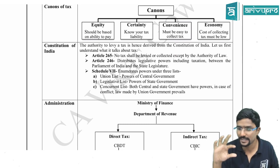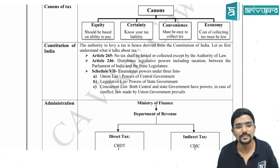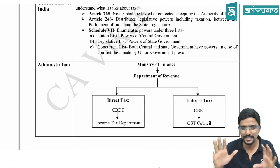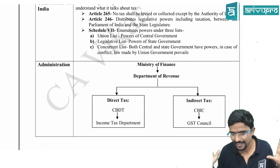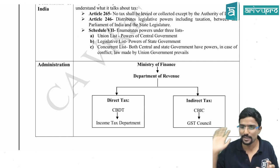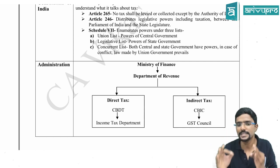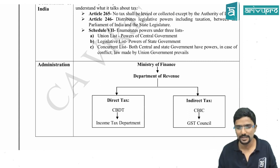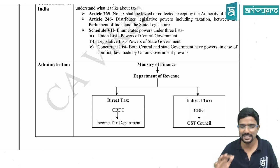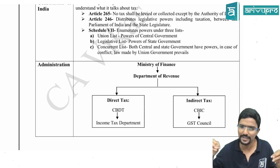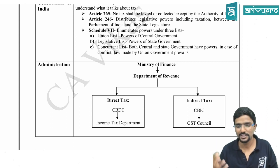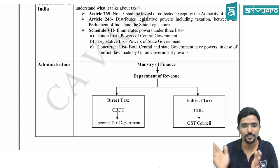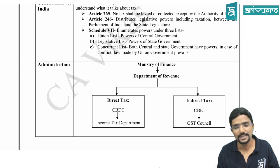CGST and SGST are both levied together, not separately — that is the example for the Concurrent List. Please don't worry about what CGST and SGST are — I will explain everything in detail in the GST chapter. If I explain it now it will take more time, so I am not going into that detail right now.